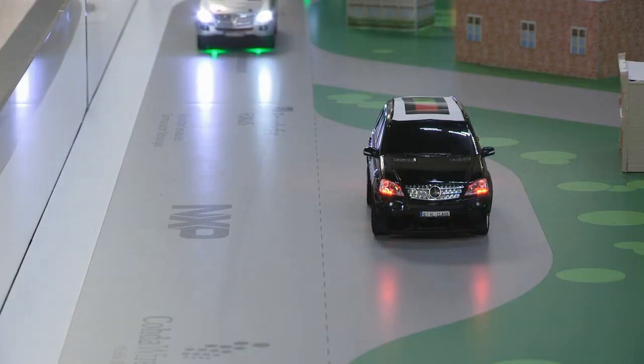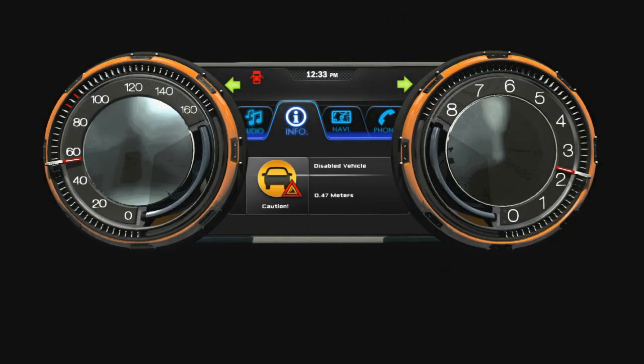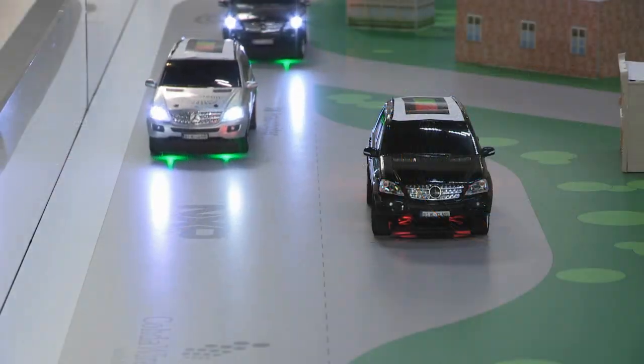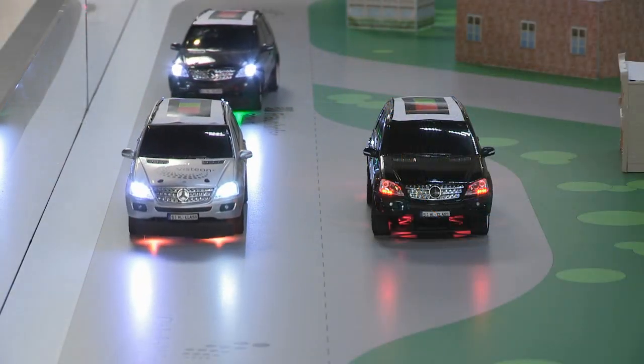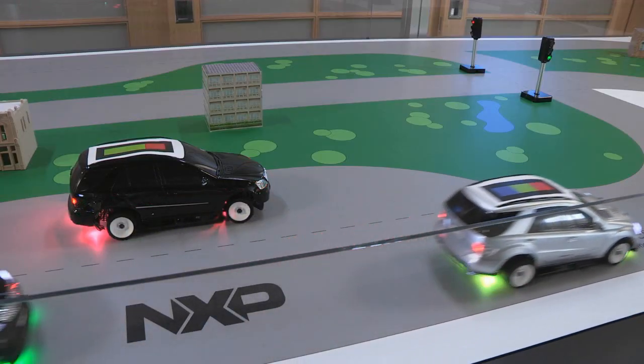As we approach the disabled vehicle, we are notified via our instrument cluster. This early warning allows us to adjust our speed accordingly and be on alert for a disabled vehicle.